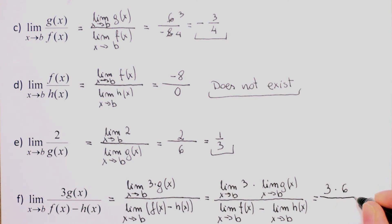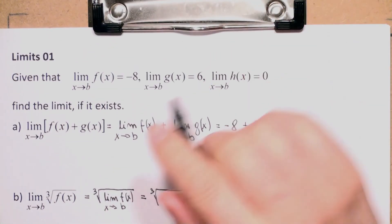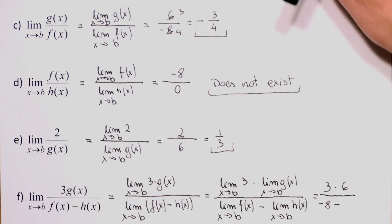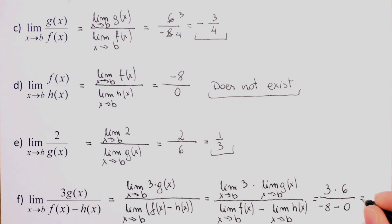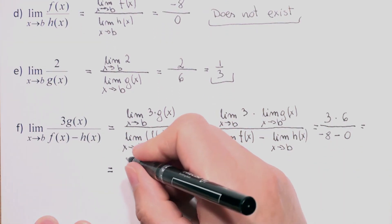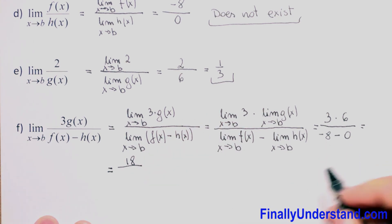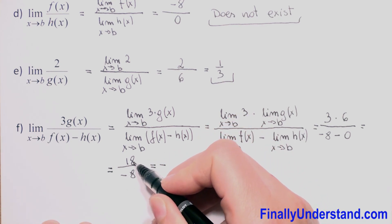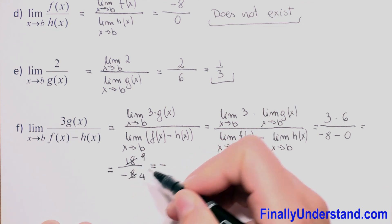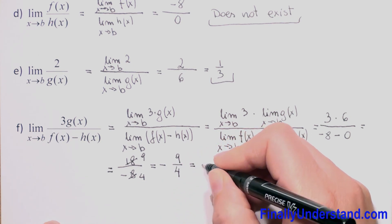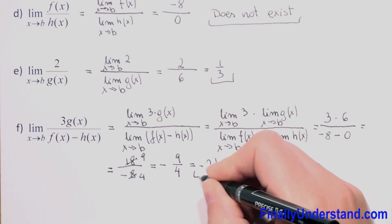In the denominator, the limit of f(x) as x approaches b is negative 8, and the limit of h(x) as x approaches b is 0. So we have 3 times 6 equals 18 in the numerator, and negative 8 minus 0 equals negative 8 in the denominator. Positive over negative is negative, and we reduce by 2 to get negative 9 over 4, which as a mixed number is negative 2 and 1 over 4. This is our answer.